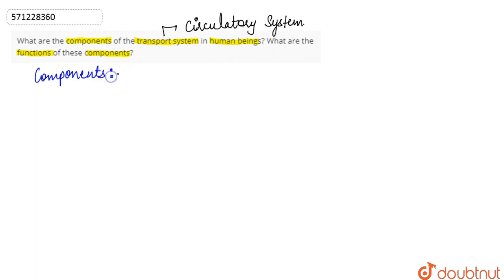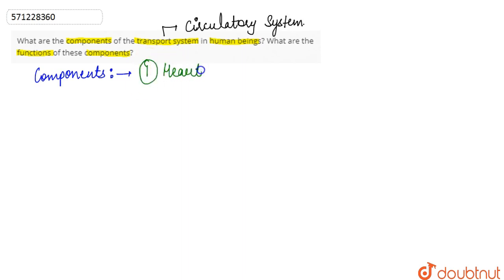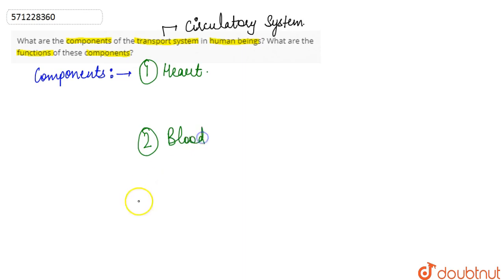The components of the circulatory system in human beings are: number one is the heart, number two is the blood, and number three are the blood vessels.